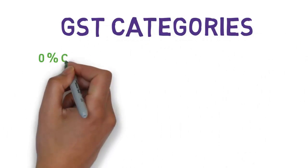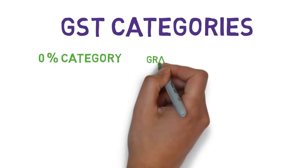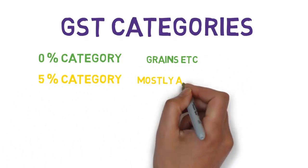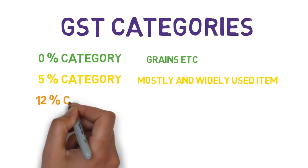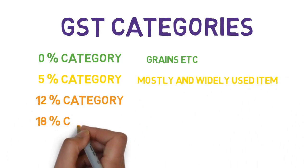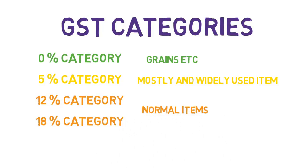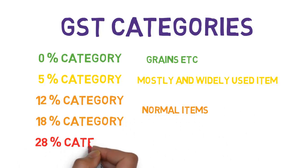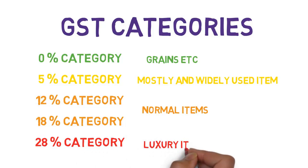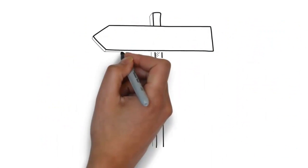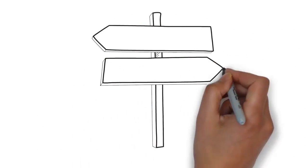There will also be five rate categories under GST in India: a zero percent category applying to food grains and essentials; a five percent category for mostly and widely used items; 12 and 18 percent categories for items which are normally used; and a 28 percent category which will apply on luxurious items.